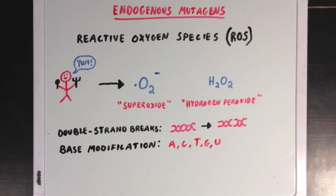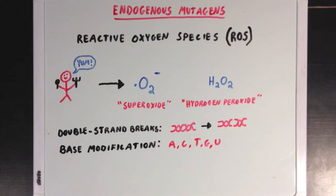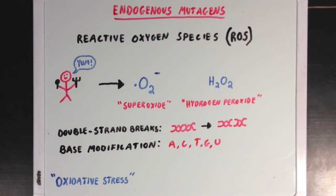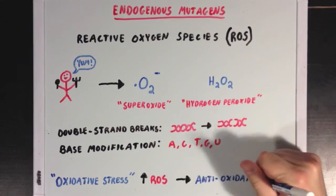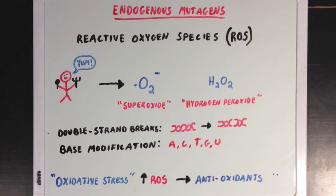You may be wondering why a cell would ever make something that could damage itself. It turns out that ROS actually have some beneficial effects on a cell, and cells have ways to make sure they don't cause damage. But sometimes ROS levels get really high and cells can't deal with them anymore — we call this oxidative stress. Antioxidants help make sure that ROS don't damage your DNA.